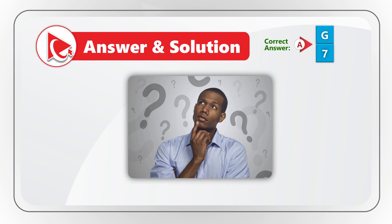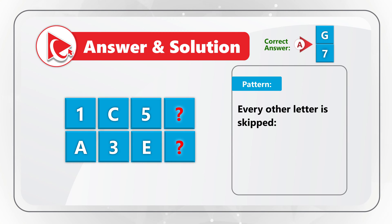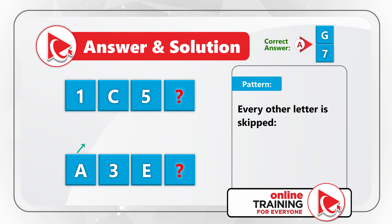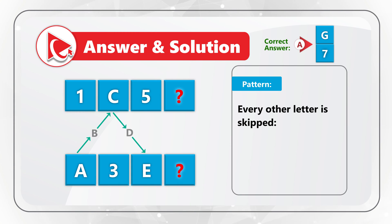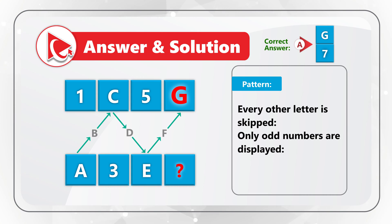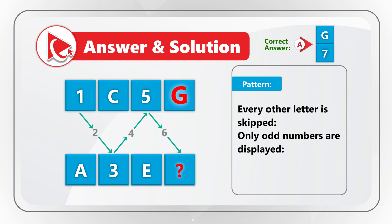Here's why: I see a pattern where every letter is skipped. Starting from the bottom letter A, then comes B, but we see C in the second column. Then D is skipped and we see E, which means F will be skipped and we will see G. The same is true for numbers — only odd numbers are displayed: 1, 3, and 5. Numbers 2, 4, and 6 are skipped, which means the missing number is 7. So the correct choice is A, G7. Did you figure it out? Please post your answer in comments.